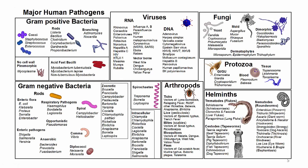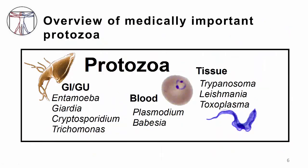In the map of major human pathogens, we're going to focus in on the protozoa section. Zooming in, we'll talk about GI and GU protozoa, focusing in on these four organisms. Let's talk about the GI protozoa first.